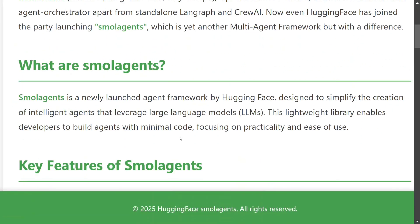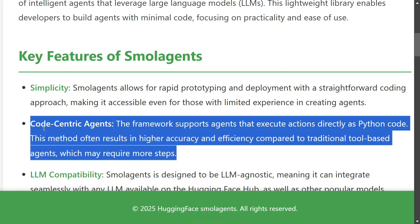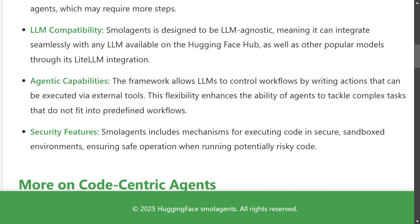What is Smolagents? Basically it is a lightweight library — the team boasts it has code less than 1000 lines — enabling building agents with minimal code. Key features include simplicity, which you'll agree with once you see the code. It's very easy to create a code-centric agent, which I think is their USP. It supports all LLMs, local LLMs, Ollama, and also supports APIs. Security features are also present.